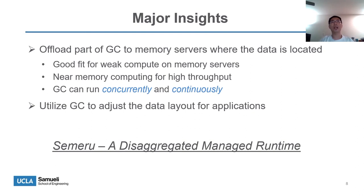To solve the poor locality problem on managed applications, we have two major insights. The first insight is to offload part of the GC tasks to memory servers, where the data is located. GC offloading has several benefits: first, GC is memory-intensive, making it a good fit for the weak compute on memory servers; second, near-memory computing can provide very high throughput; and finally, GC can run concurrently and continuously on memory servers. Our second insight is that we can utilize GC to adjust the data layout for the applications. Based on these insights, we propose SAMRU, a disaggregated managed runtime.